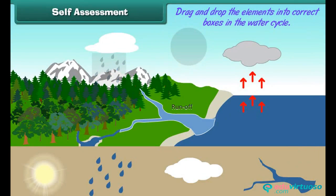Self-assessment: Here is a picture of the water cycle with some elements missing. Drag and drop the elements into the correct boxes in the water cycle.